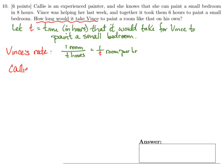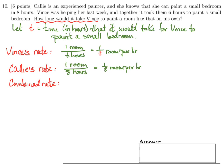Callie can paint a room in eight hours, so her rate is one eighth of a room per hour. Their combined rate — since together it took them six hours — is one sixth of a room per hour. We can also get their combined rate by adding their individual rates: Vince's rate is one over T, Callie's rate is one over eight, and adding those should equal one over six. This is a rational equation.